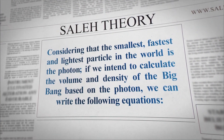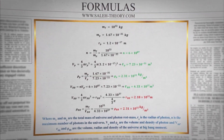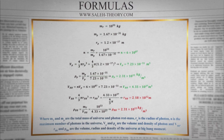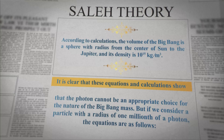Considering that the smallest, fastest, and lightest particle in the world is the photon, if we intend to calculate the volume and density of the Big Bang based on the photon, we can write the following equations. According to calculations, the volume of the Big Bang is a sphere with radius from the center of the Sun to Jupiter, and its density is 10 to the power of 15 kg per cubic meter. It is clear that these equations and calculations show that the photon cannot be an appropriate choice for the nature of the Big Bang mass.